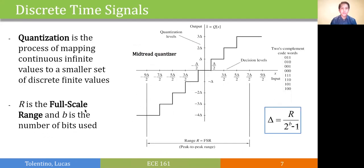Quantization is the process of mapping continuous infinite values into a smaller set of discrete finite values. The resolution of the quantization is denoted by delta, which is R over 2 to the v plus 1, where R is the full scale range and v is the number of bits used.